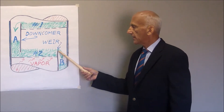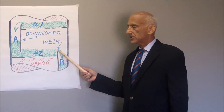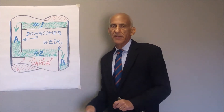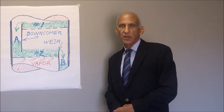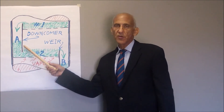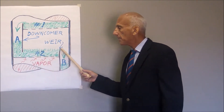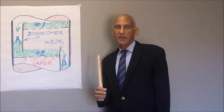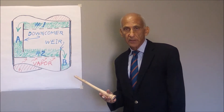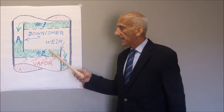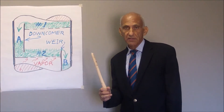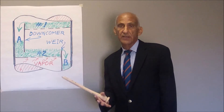The height of the outlet weir needs to be perhaps a half inch higher than the bottom edge of the downcomer above the tray below. If the bottom edge of the downcomer is too high above the top edge of the weir, then the bottom edge of the downcomer may not be submerged in the liquid, and vapor will blow up through downcomer A because downcomer A has lost its seal.